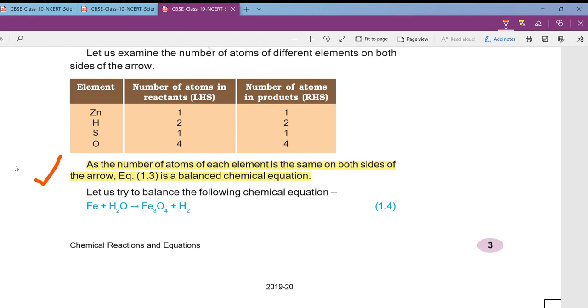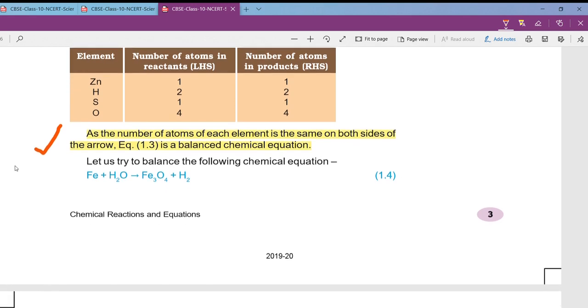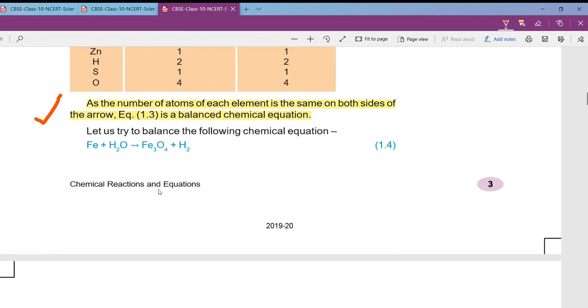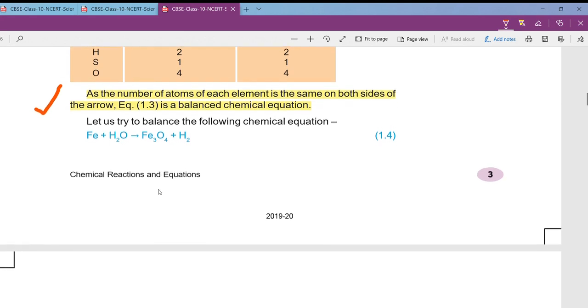Yesterday in the class we have stopped with what is a balanced chemical equation. Today we are going to learn how to balance an unbalanced equation, that is how to balance a crude equation which is given. We have been seeing this example how ferrous reacts with water.